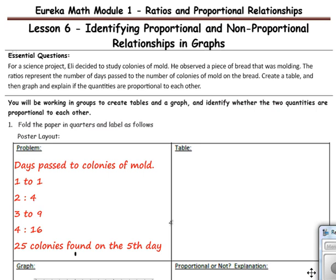You do not need to copy the essential question. For a science project, Eli decided to study colonies of mold. He observed a piece of bread that was molding. The ratios represent the number of days passed to the number of colonies of mold on the bread. Create a table and then a graph and explain if the quantities are proportional to each other.